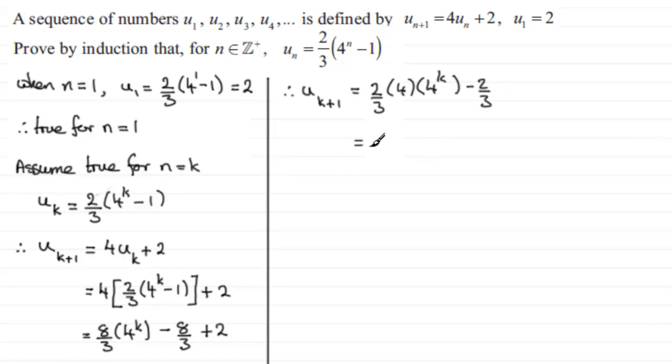And what have we got next? Well, we can add these two together in the sense that this is 4 to the power 1 multiplied by 4 to the power k. So you would just add the powers because they're to the same base, base 4 here. So what we've got is 2/3 multiplied by 4 to the power k plus 1.